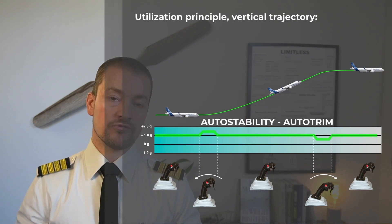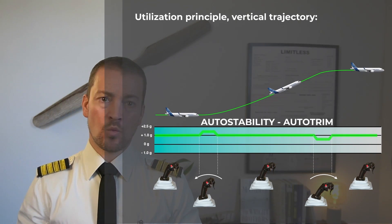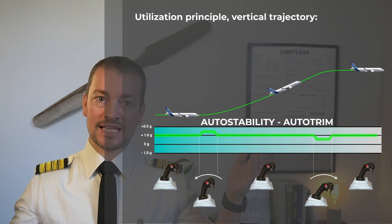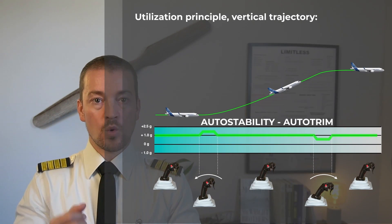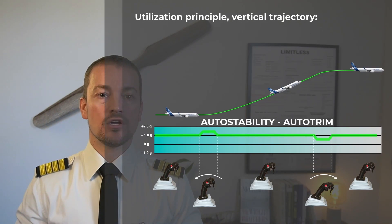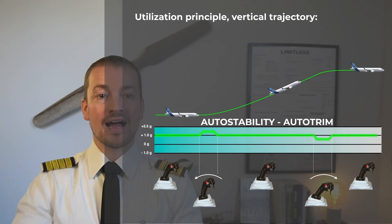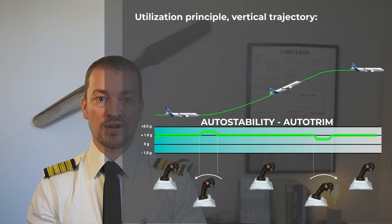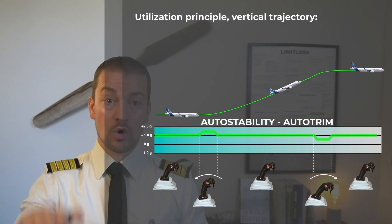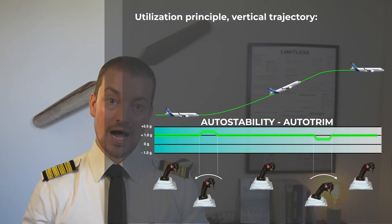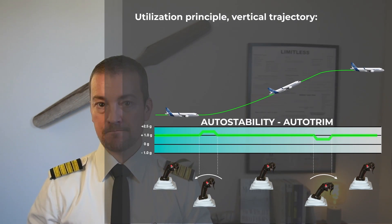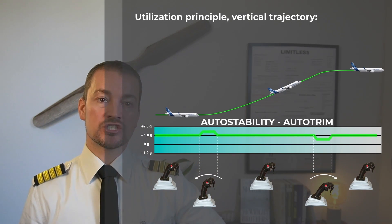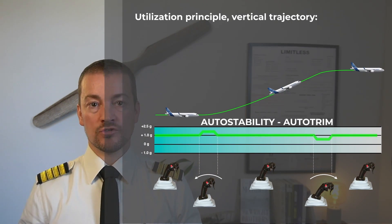A 1g environment is what we experience every day — no change. 1.4g means a slight change, up to 2.5g, which would be a side stick deflection as fast as you can to maximum deflection, making the aircraft climb at the highest possible rate. On this bar, I have illustrated with a green line the change in g-load as we ask for the maneuver.